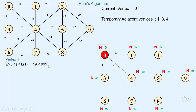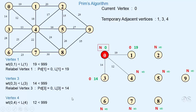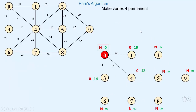First we take vertex 1 — this 19 is less than infinity, so we relabel it. Next we take vertex 3 — this 14 is less than infinity, so we relabel it. Next we take vertex 4 — this 12 is less than infinity, so we relabel it. From all temporary vertices, vertex 4 has the minimum length, so we make it permanent. The predecessor of 4 is 0, so edge (0, 4) is included in the minimum spanning tree. Now 4 is the current vertex.